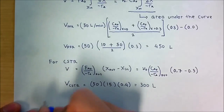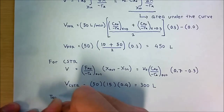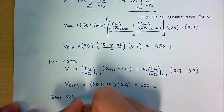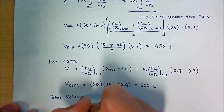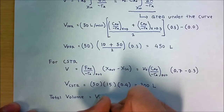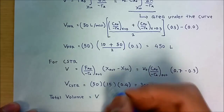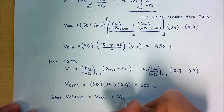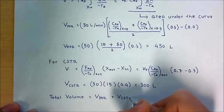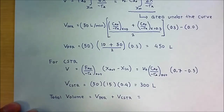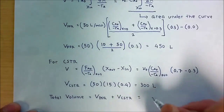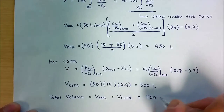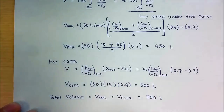The total volume equals the volume of PFR plus the volume of CSTR, which is 450 + 300 = 750 liters.